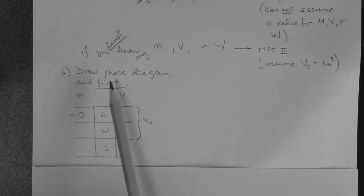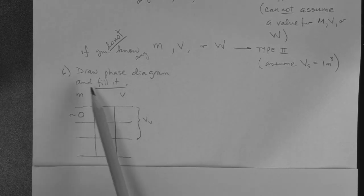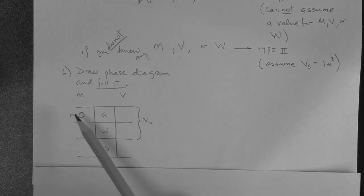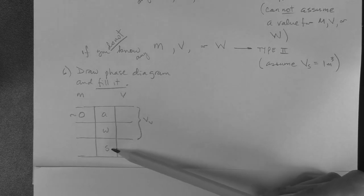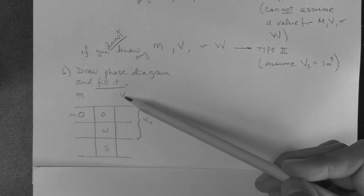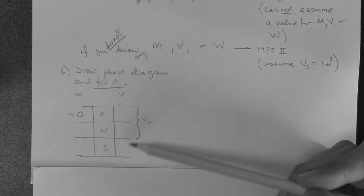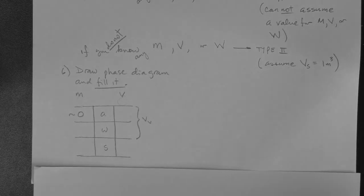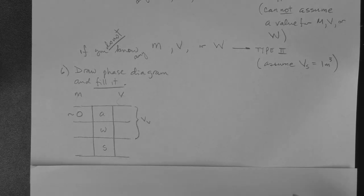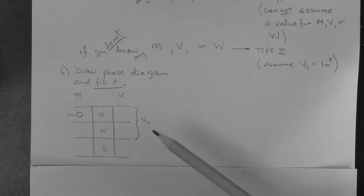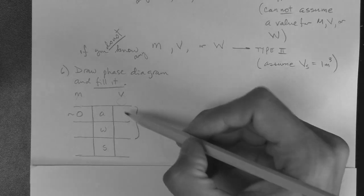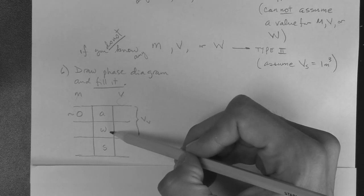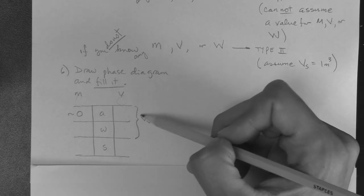Draw the phase diagram, which looks like this, and fill it. Okay, phase diagram. Air, water, solids. Mass, volume. All right. These are the masses. These are the volumes. This is the total volume, and this is the total mass. Two things to say here. First, the volume of voids is the volume of air and the volume of water together. These two sum to the volume of voids.